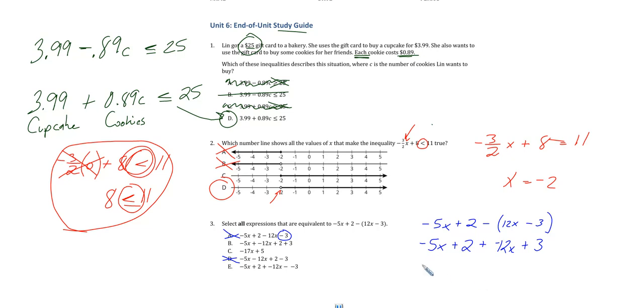And now we put our like stuff together. We put our 5x and our negative 12x together. We put our 2 with our 3, and we combine our like terms.